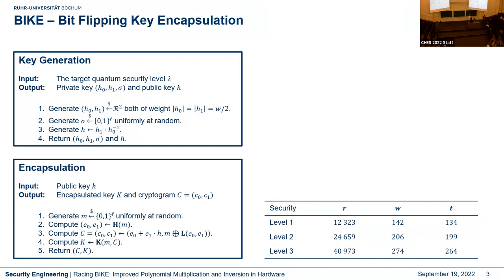In the encapsulation, we sample two error polynomials e0 and e1, based on a secret message m which is a random string of 256 bits. Then we compute the cryptogram: the first part c0 is computed by e0 plus the product of e1 and the public key h, and the second part is the message XORed with a hash of the error vectors. We then compute the shared secret key k.